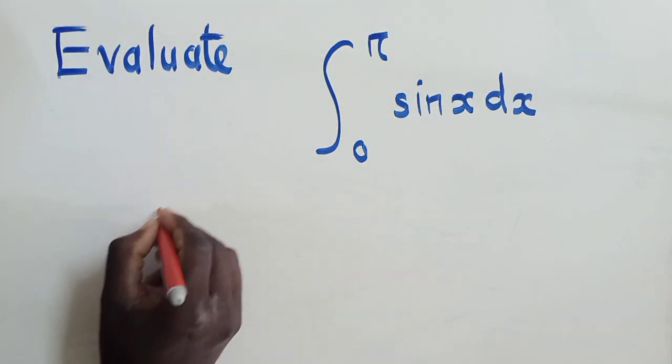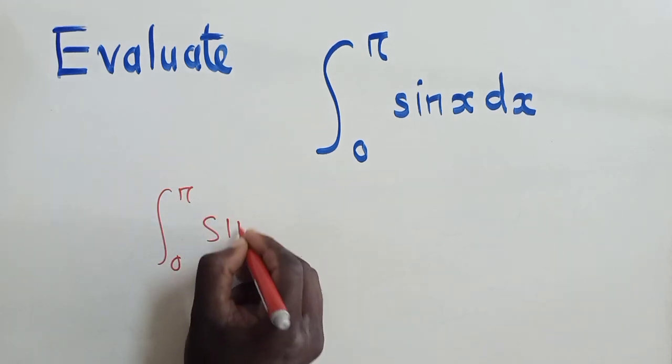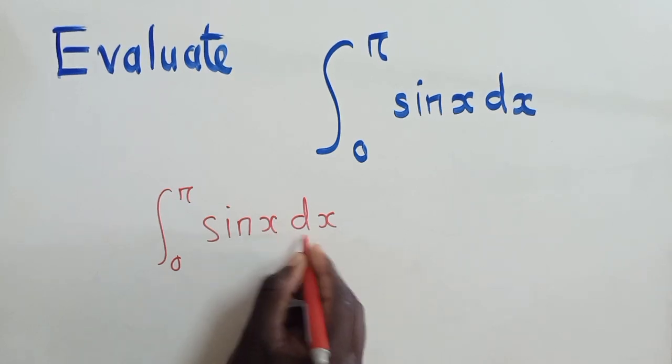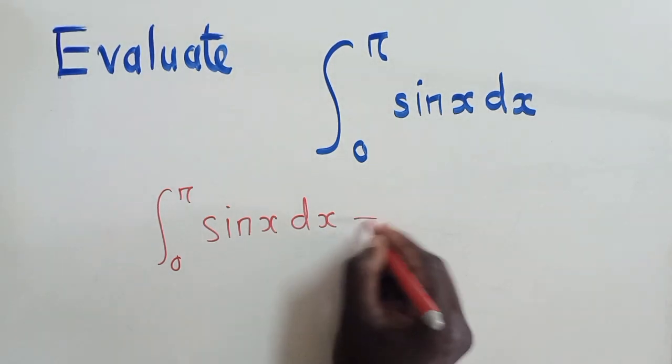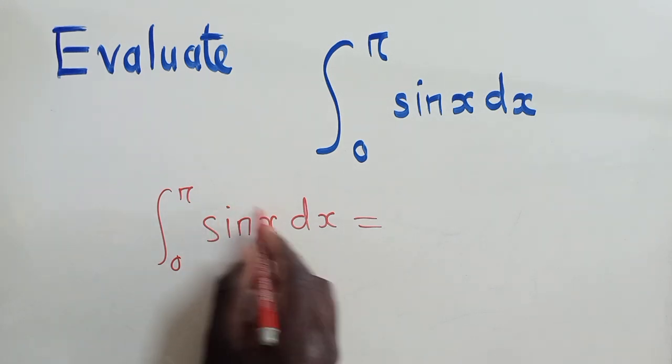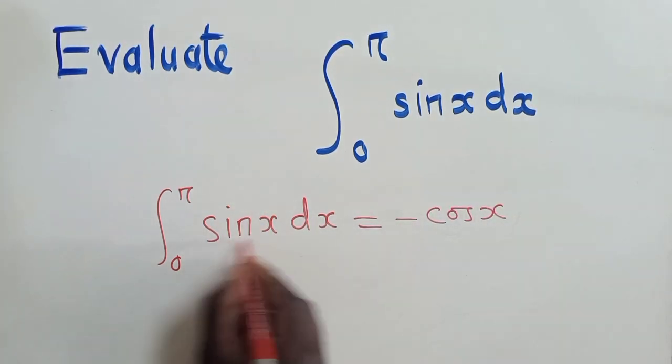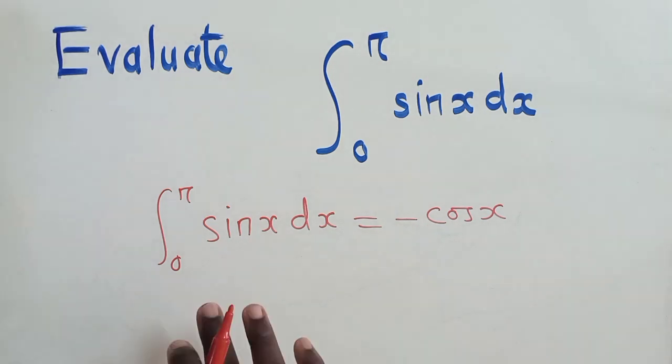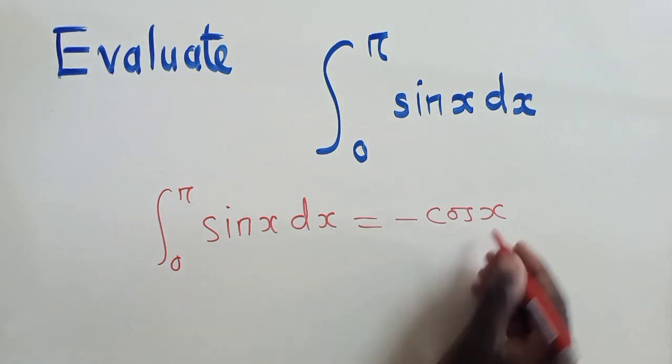All what you need to know is that when you have the integral, this is the integral of sine x with respect to x, we just write negative cos x. The integral of sine x is equal to negative cos x.